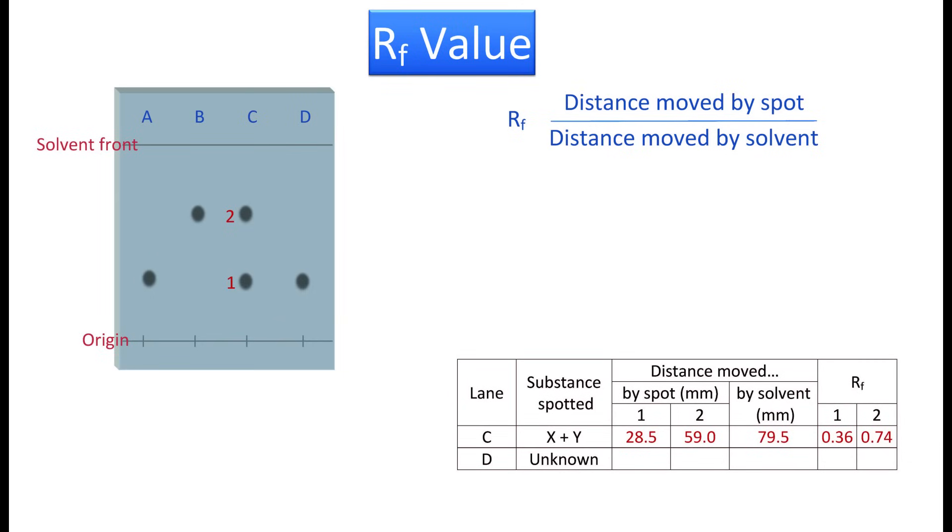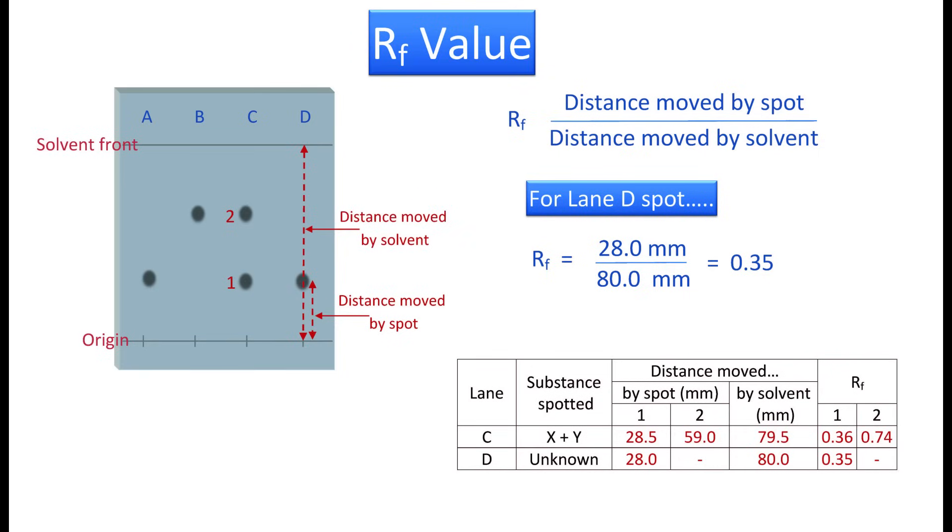Now using this developed plate as an example, and assuming that RF values for the spots 1 and 2 in lane C have already been determined, let's now obtain the RF for the single spot in lane D. The distance moved by the spot from the origin to its center is 28.0 millimeters, and the distance moved by the solvent from the origin through the spot to the solvent front is 80.0 millimeters. The RF for the spot is thus calculated to be 0.35. Note that it's customary to report RF values to two decimal places.